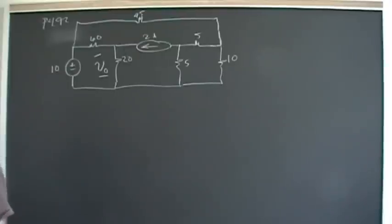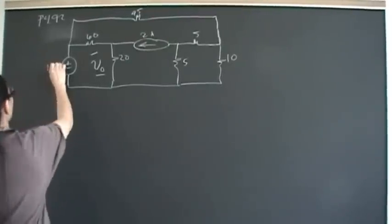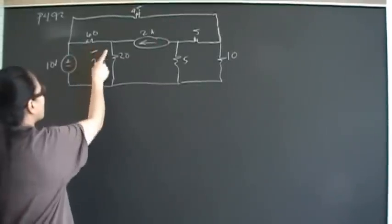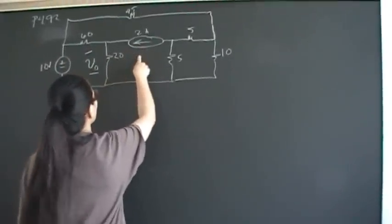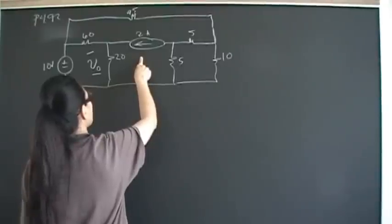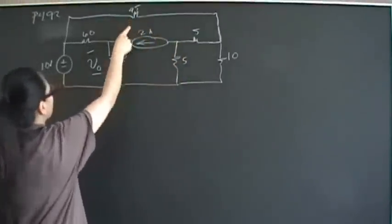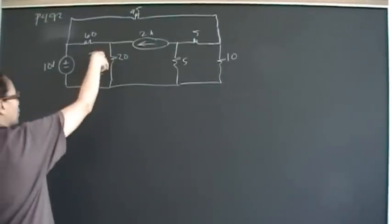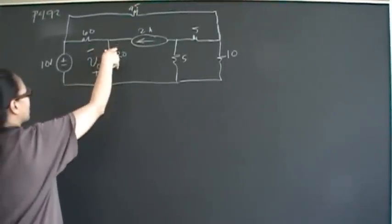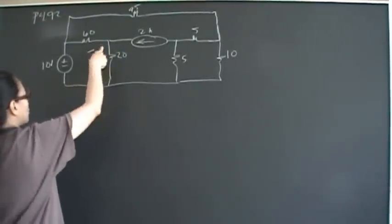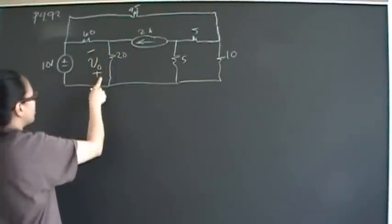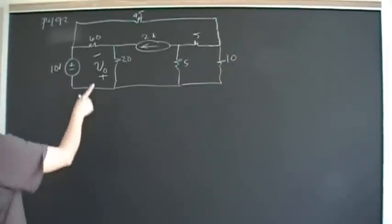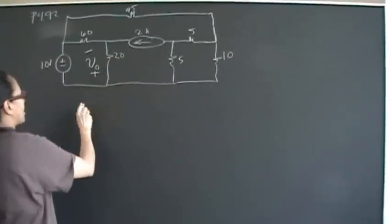let's take a look at this circuit. We have a 10-volt independent voltage source, 60 ohms, 20 ohms, a 2-amp independent current source, and then we have 5, 5, 10, and 45. Superposition says that if we're looking for this voltage drop here — or in this case, the voltage rise — going from minus to plus across the 20-ohm resistor,